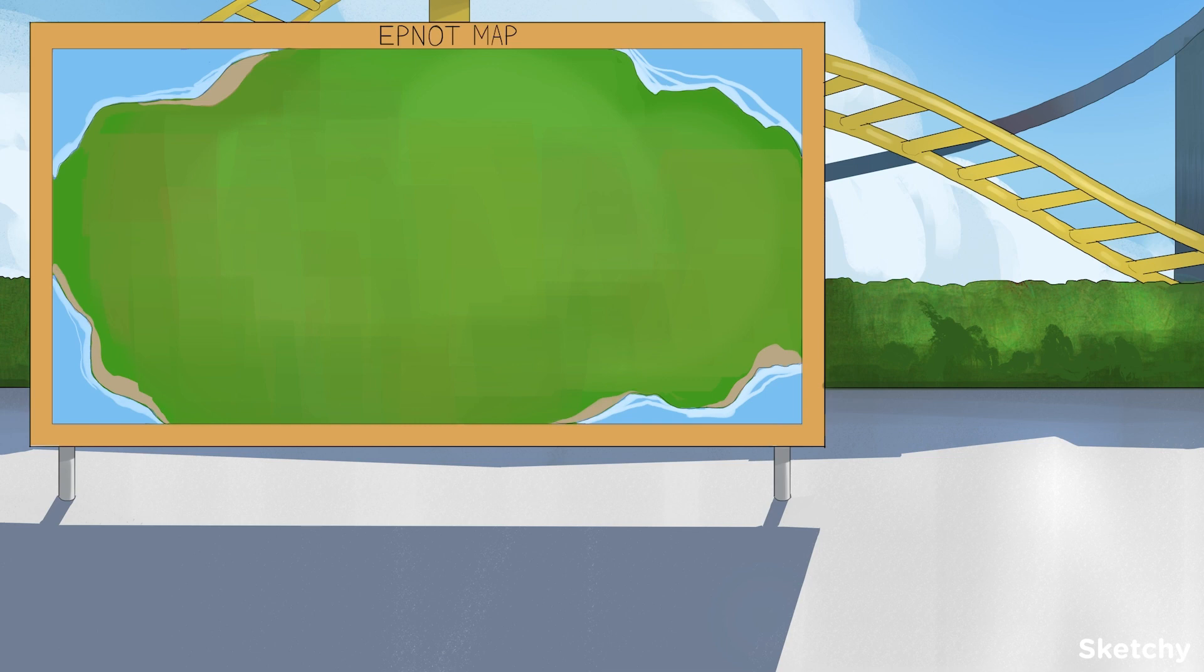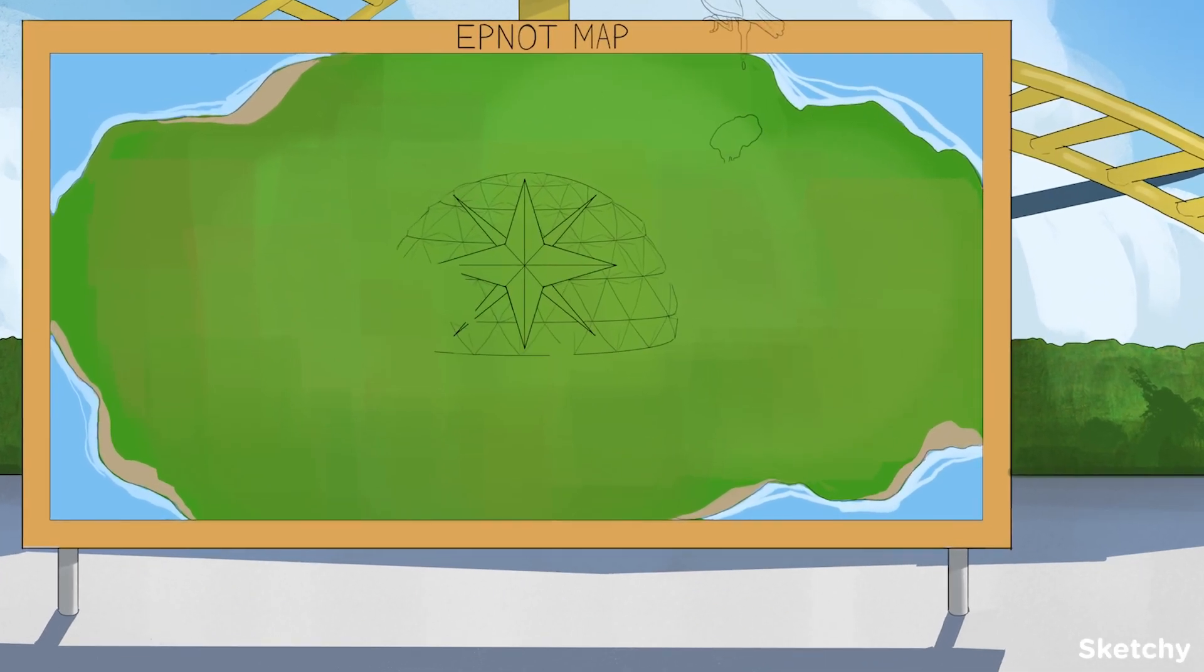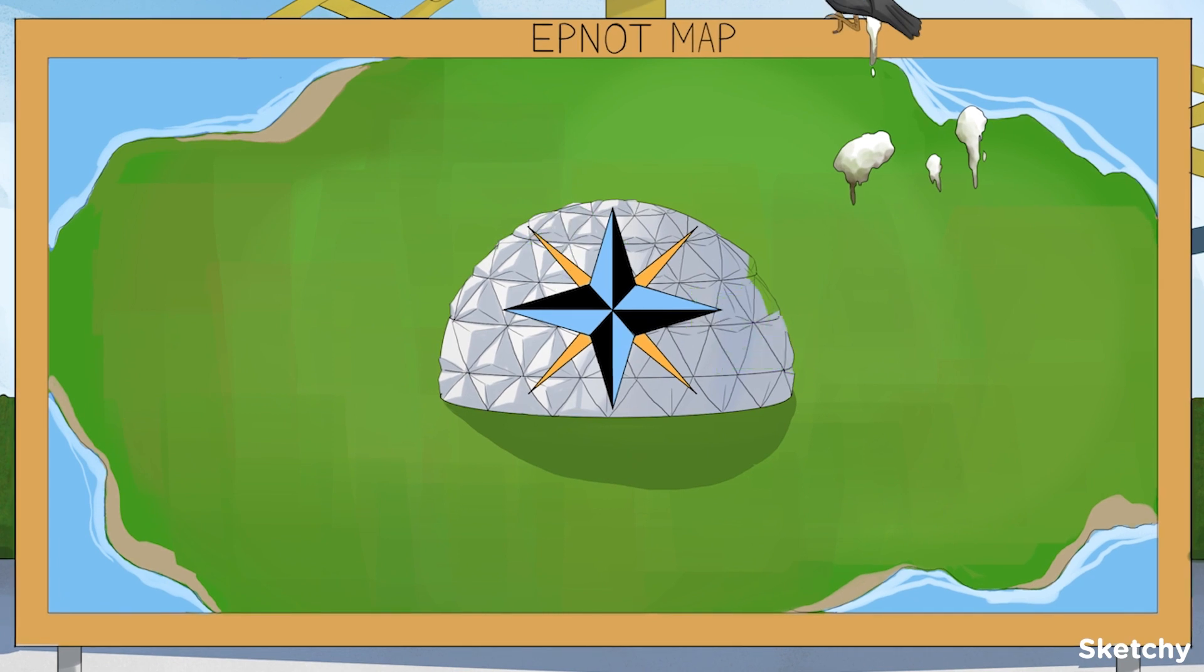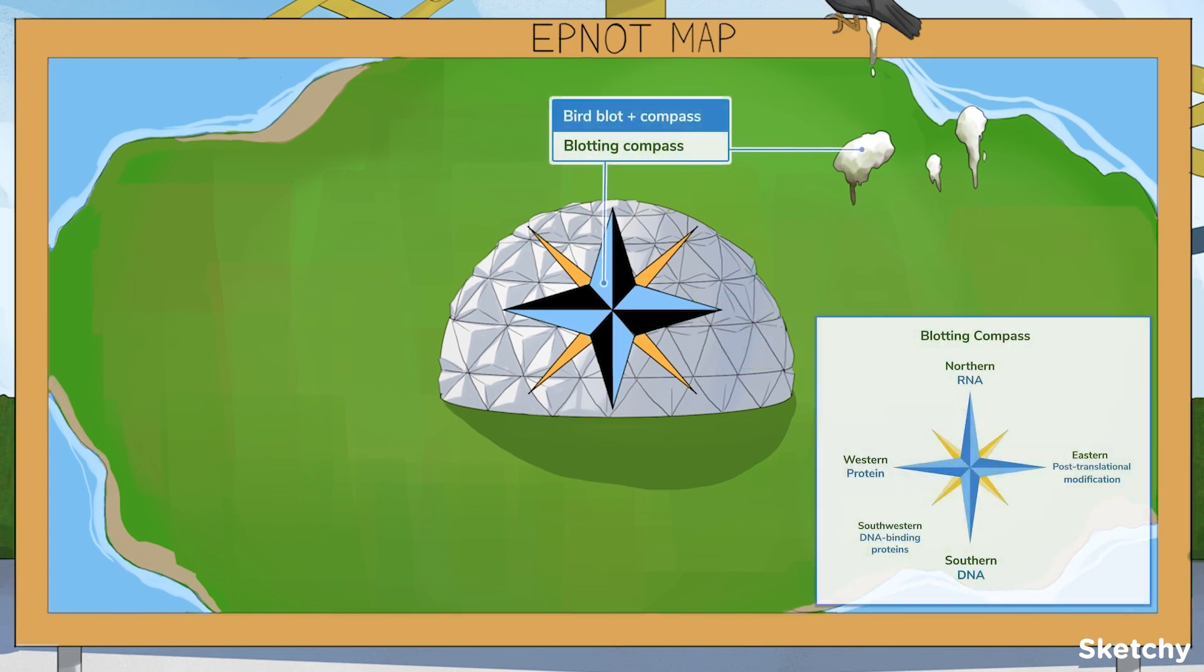Alright, so where to next? Well, here's the park map covered in bird poo, naturally. We'll use this trusty compass to describe the blotting techniques.